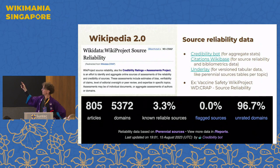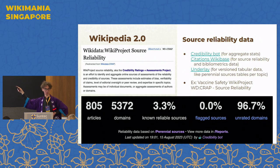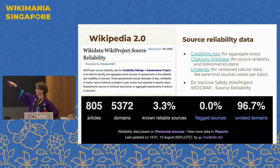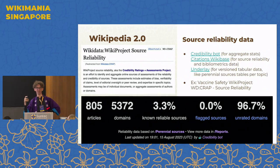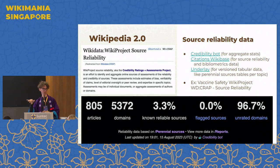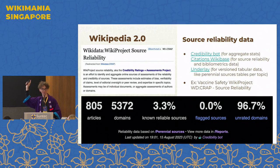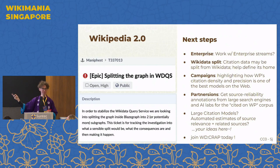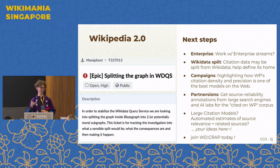Right now a lot of the flags are embedded in user scripts and user widgets that people use for reading, which highlight the sources on a page for how good they are. I've been working on versioning tabular data with the Underlay project for perennial sources tables, to map the different topic-specific perennial sources tables across wiki projects into one another or into the global one. And WDCRAP, which I invite everyone to contribute to, is the Wikidata project discussing source reliability and how we can improve it.